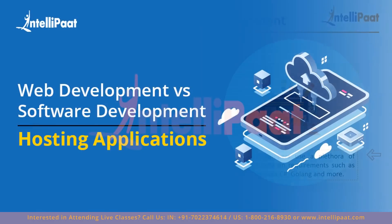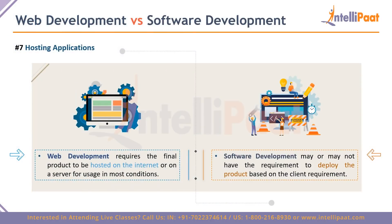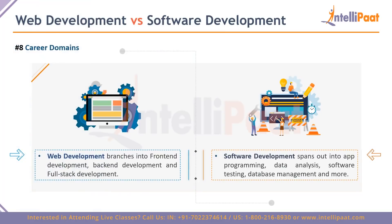The seventh point is hosting applications. In web development, the final product must be hosted on the internet so it can be accessed from anywhere in the world, using a server architecture where data is stored on a server and clients connect to it. In software development, it may or may not involve deploying to the web at all — it depends on client requirements. The client might want the software to communicate with their servers without being hosted on the web, which requires its own set of skills.